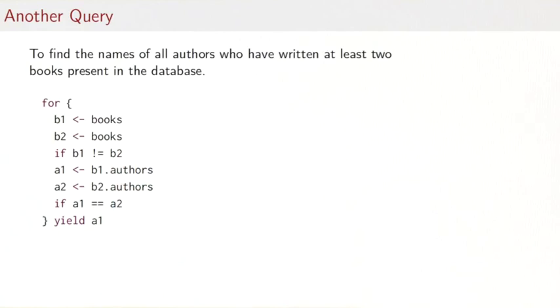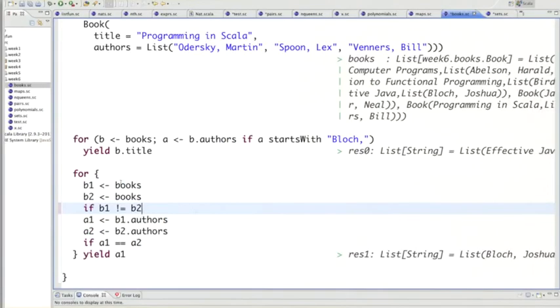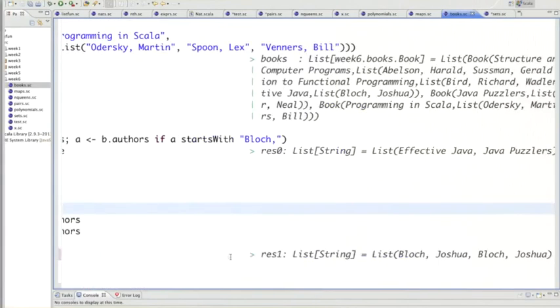We demand that b1 and b2 are different. Now we have pairs of different books. We let a1 and a2 range over the authors of these pairs, and if we find a match—if we find an author that appears in the authors lists of both b1 and b2—then we've found an author that has published at least two books, so we give it back as a result. If we do that, I've put the query that you've seen on the slide up here. Let's see what the result is.